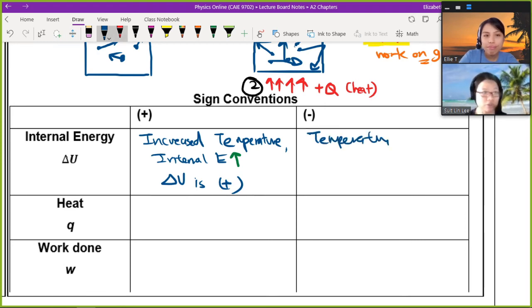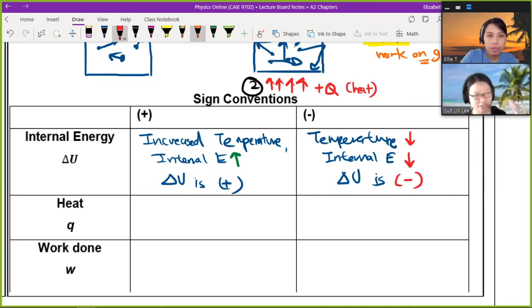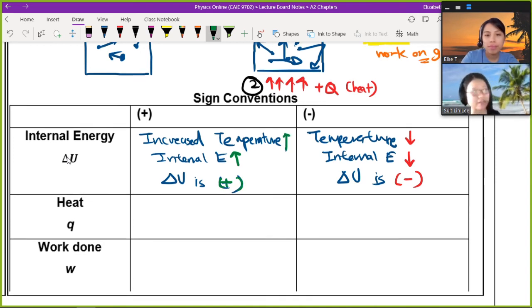So temperature increase or decrease does not really depend on whether heat is added or not. So this is the part that sometimes confuses people because we are so used to thinking that if the temperature increased then heat add more, temperature decreased, then heat removed more. But it depends. So in this case, the only thing that you can say when the temperature changes is the internal energy. Temperature increase, internal energy increase, positive delta U. Temperature decrease, internal energy decrease, negative delta U.